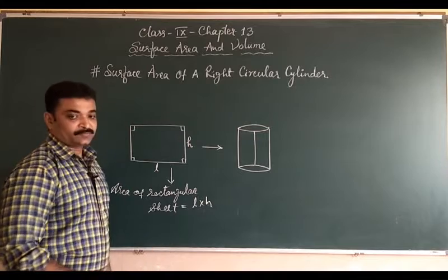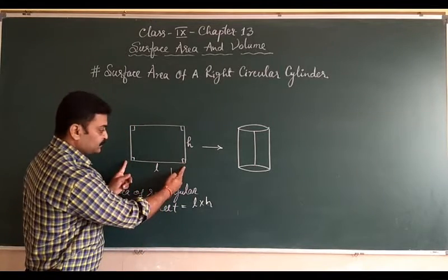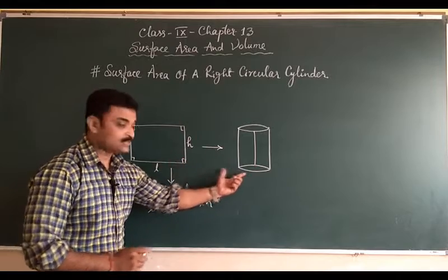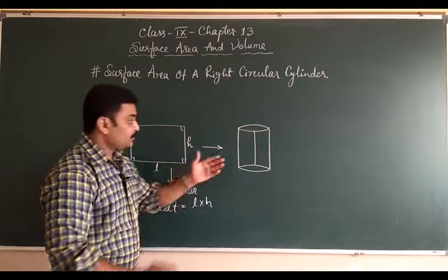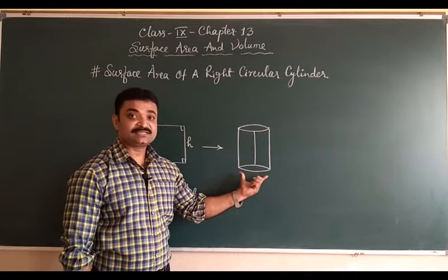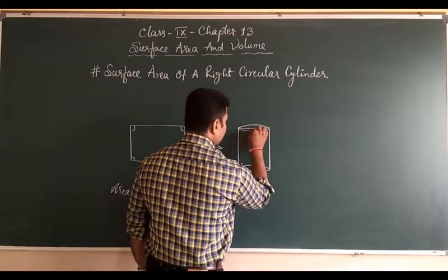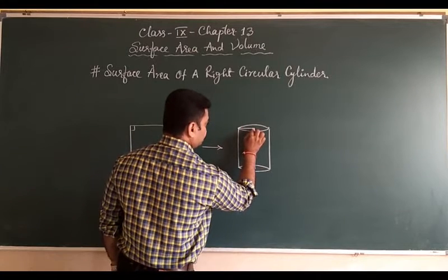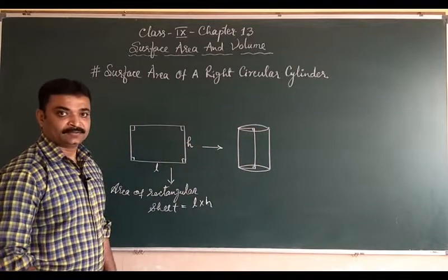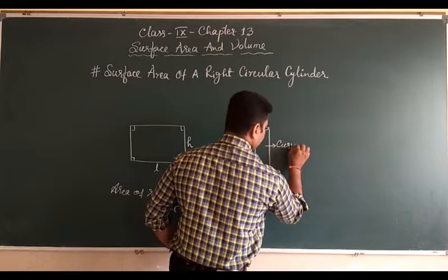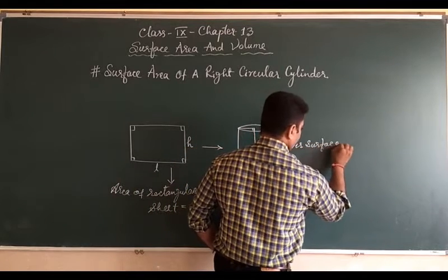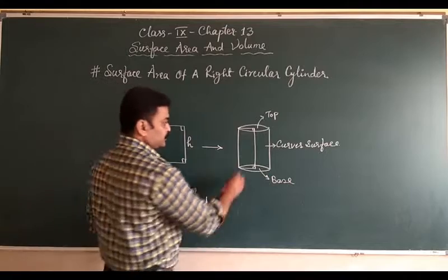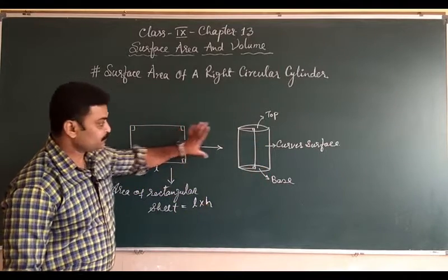Now this length is converting into the circular base. This sheet of paper is converting into the curved shape. This shape is called a cylinder. Since it is revolving around the right angle, it is called a right circular cylinder. This surface is called the curved surface. This is the top and this is the base. This line is equivalent to this line, so this is called the height.